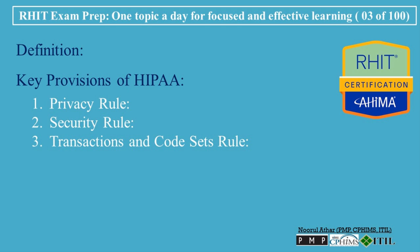3. Transactions and Code Sets Rule: This provision standardizes the coding systems and electronic formats used in health care transactions, facilitating more efficient electronic billing and claims processing. 4. Identifier Standards: HIPAA mandates the use of unique identifiers for health care providers — national provider identifier, or NPI — health plans, and employers, enhancing the standardization of health care transactions.